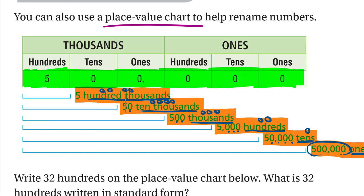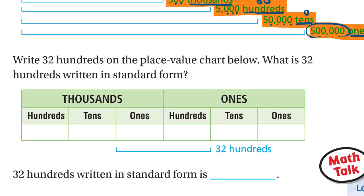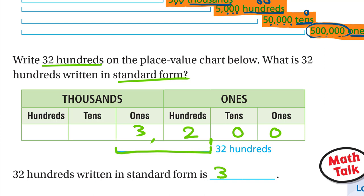Write 32 hundreds on the place value chart. What is 3,200 written in standard form? The hundreds column stops here, so we write 32 starting there. The tens and ones get zeros, giving us 3,200. You can also think of it this way: the word 'hundreds' means two zeros, so write 32 and add two zeros — 3,200, or three thousand two hundred.